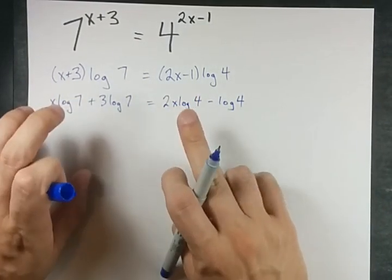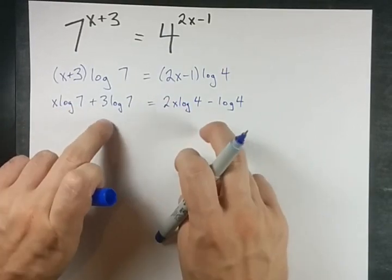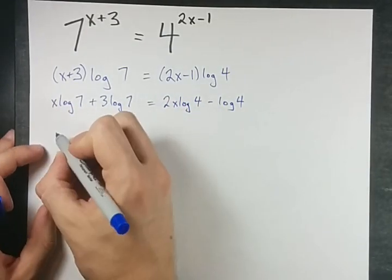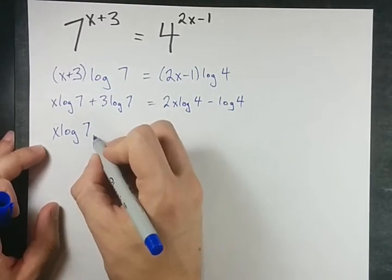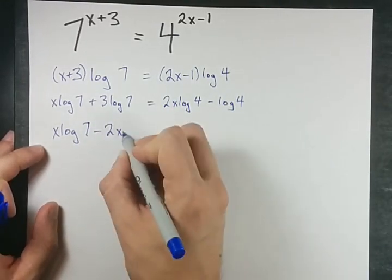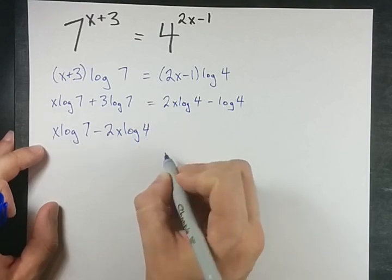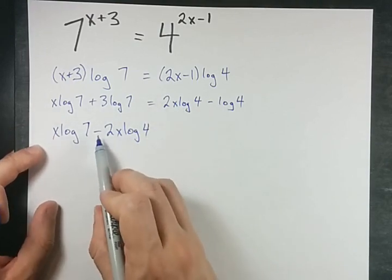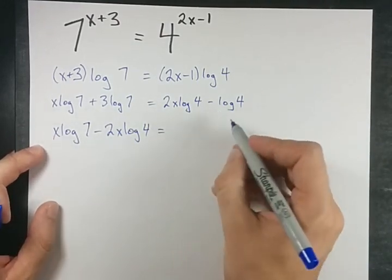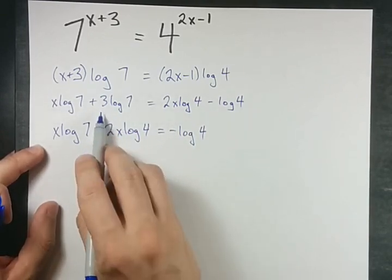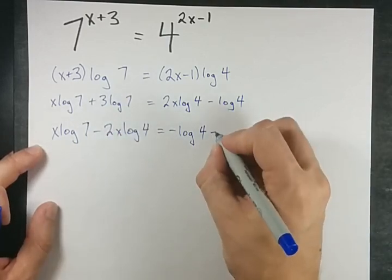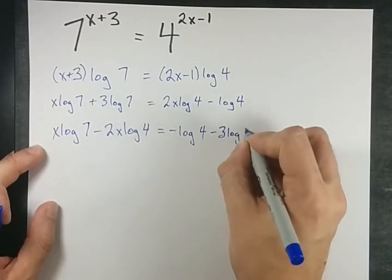I'm going to collect terms that have x in it on one side and terms without x on the other side. On the left-hand side, I'll keep my x log 7. I will move my 2x log 4 to the left-hand side and switch the sign as I do it. On the right-hand side, I still have my negative log 4 over here. And I'm going to move my 3 log 7 along with switching the sign.